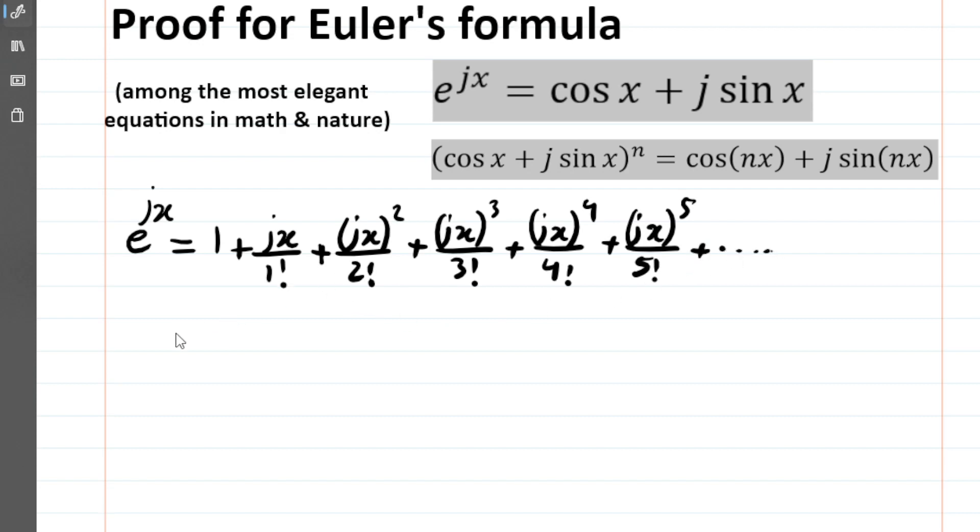We're going to simplify this. What we get is 1 + jx, and for the next term we have (jx)^2. Since j^2 = -1, instead of plus here I'm going to write -x^2/2!.